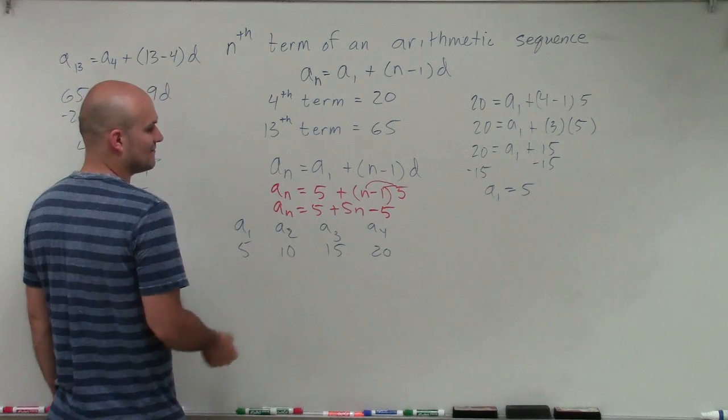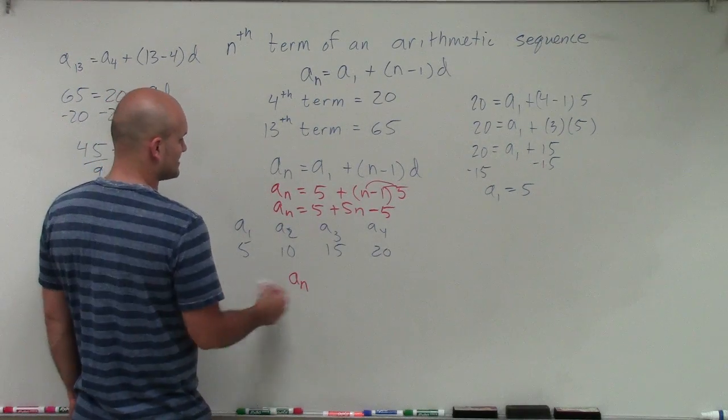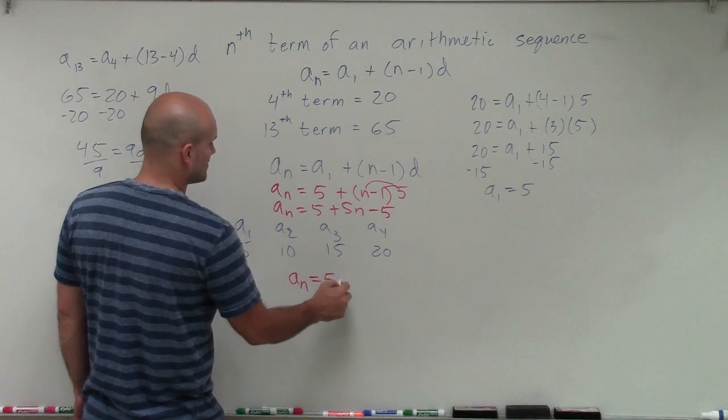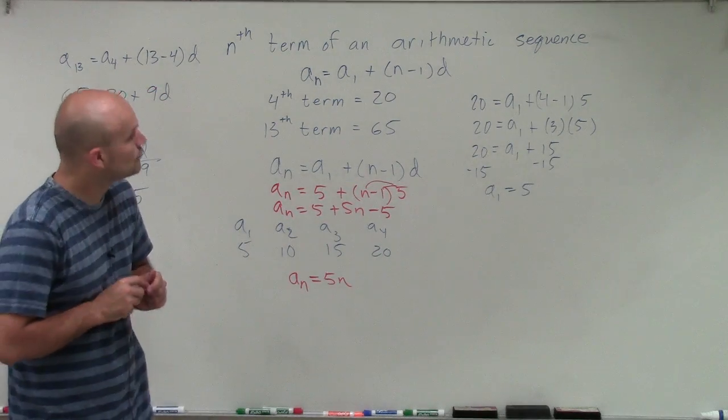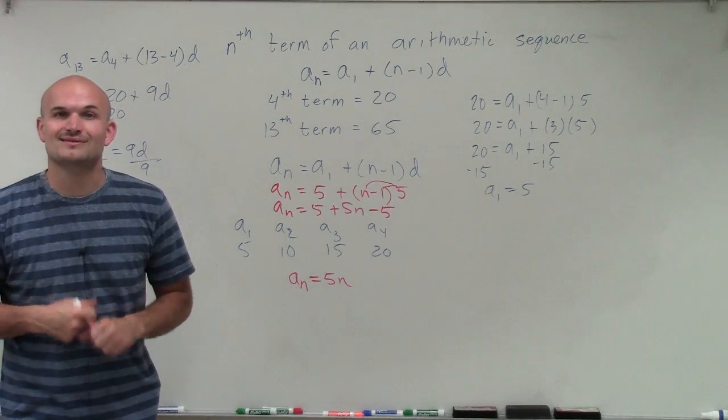Well, the 5 and the negative 5 are going to cancel out, so add up to 0. So a sub n equals 5n is my final rule for my nth term sequence. Thanks.